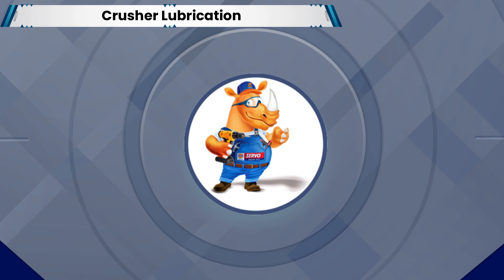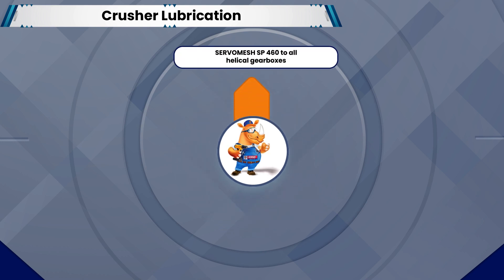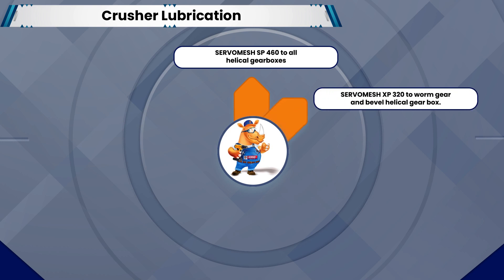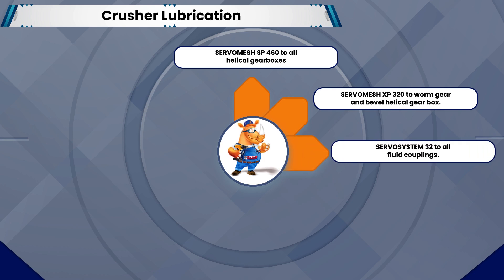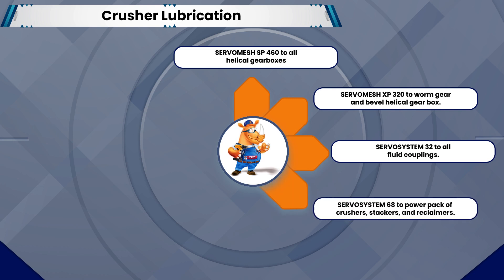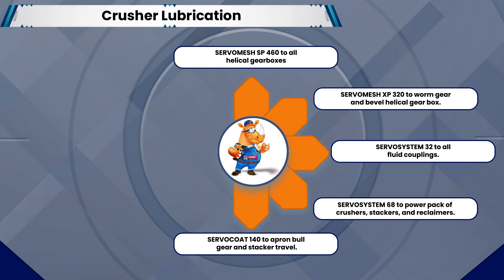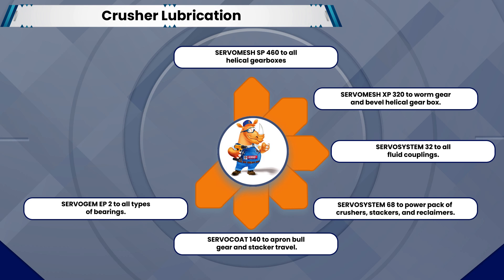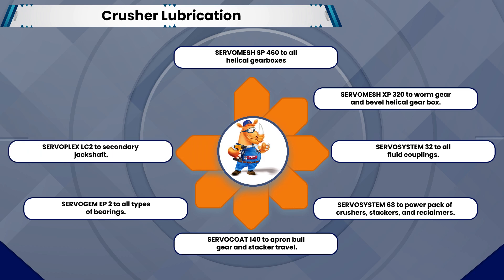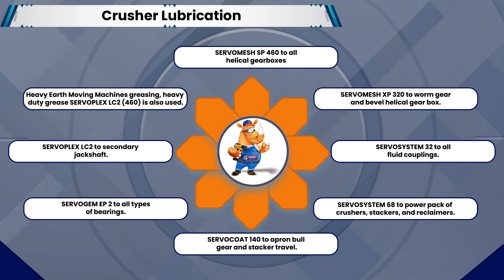Here are the lubricants recommended by IOCL: Servo Mesh SP460 for all helical gearboxes; Servo Mesh XP320 for worm gear and bevel helical gearboxes; Servo System 32 for all fluid couplings; Servo System 68 for power packs of crushers, stackers, and reclaimers; Servo Code 140 for apron, bull gear, and stacker travel; Servo GEM EP2 for all types of bearings; Servo Plex LC2 for secondary jack shafts. For heavy earth moving machines, Servo Plex LC2 460 heavy duty grease is also used.